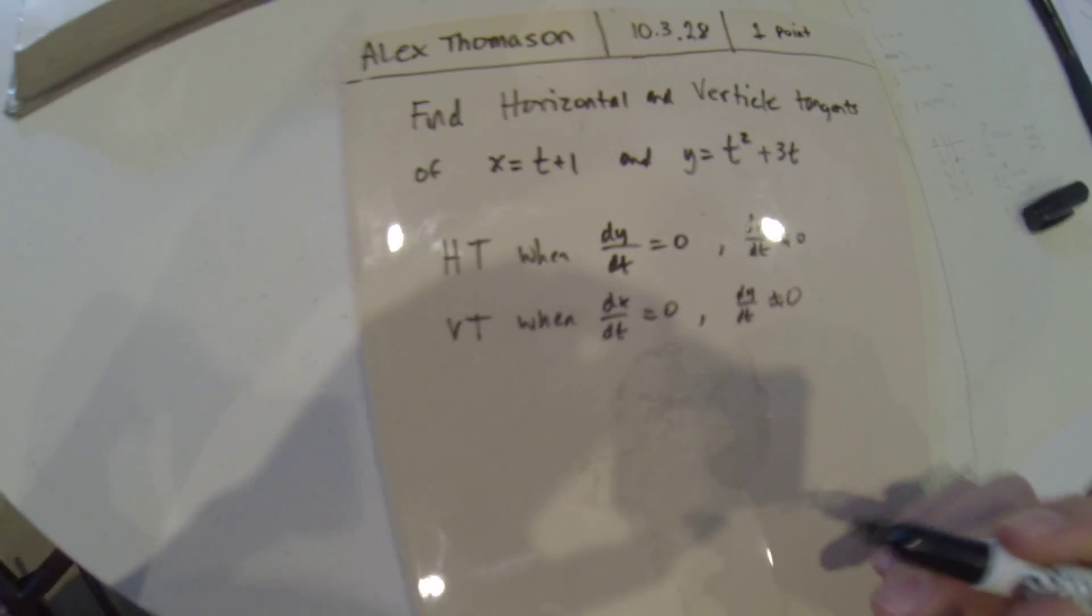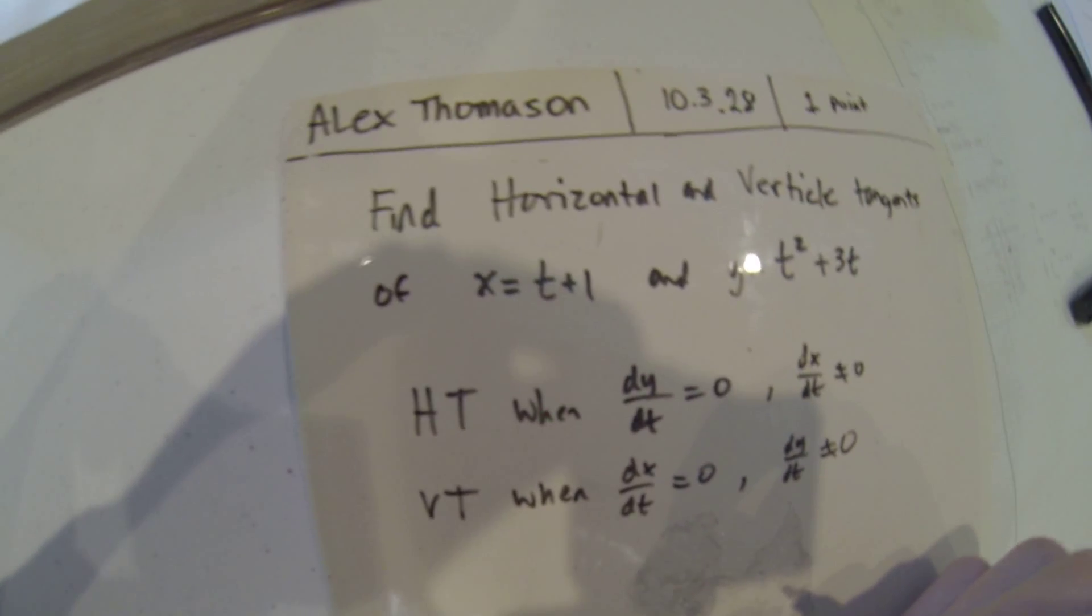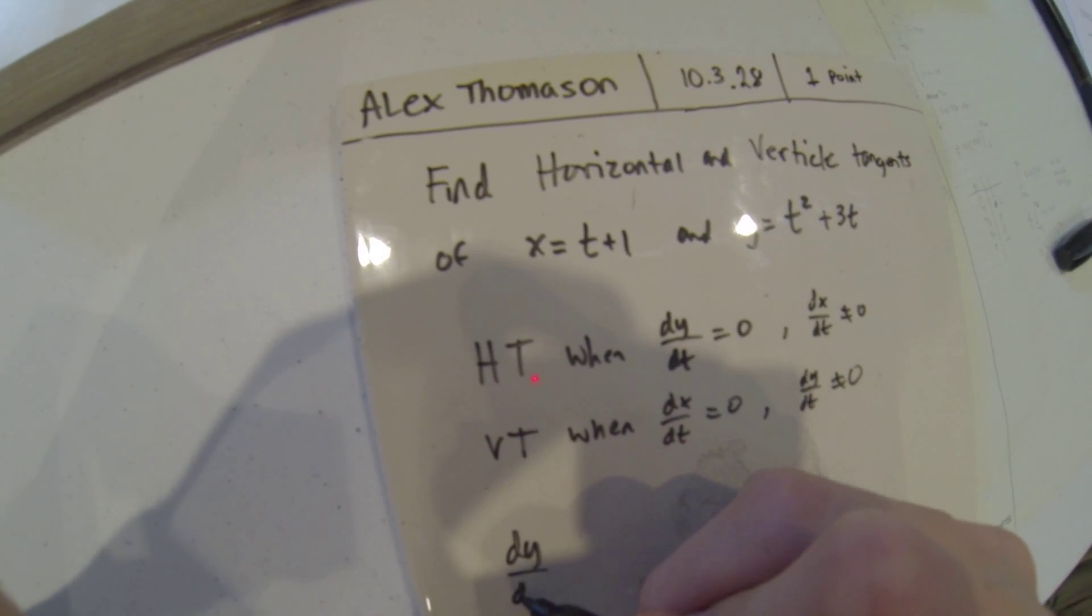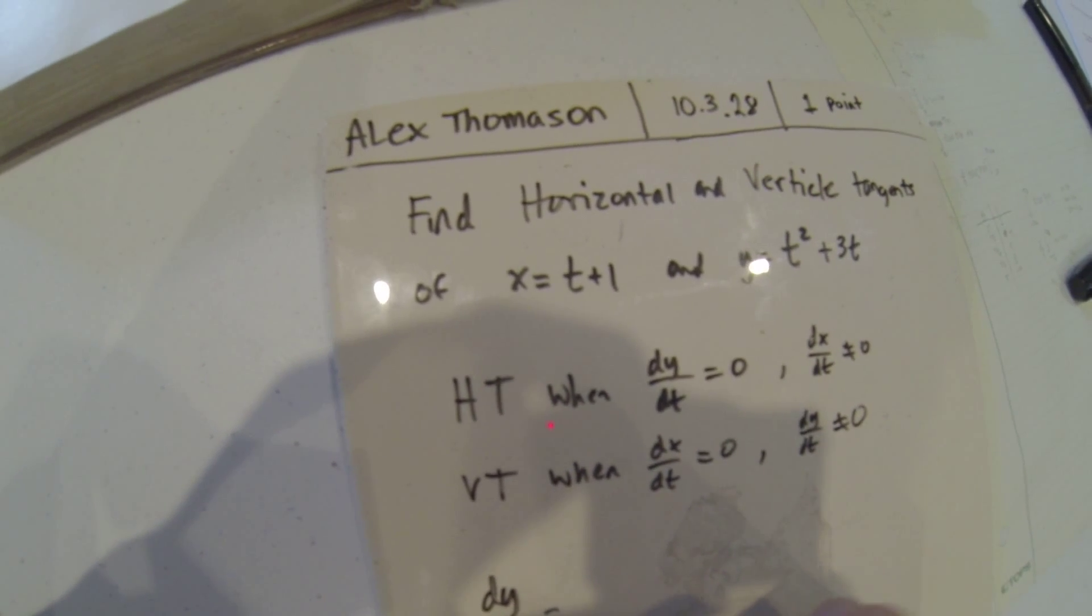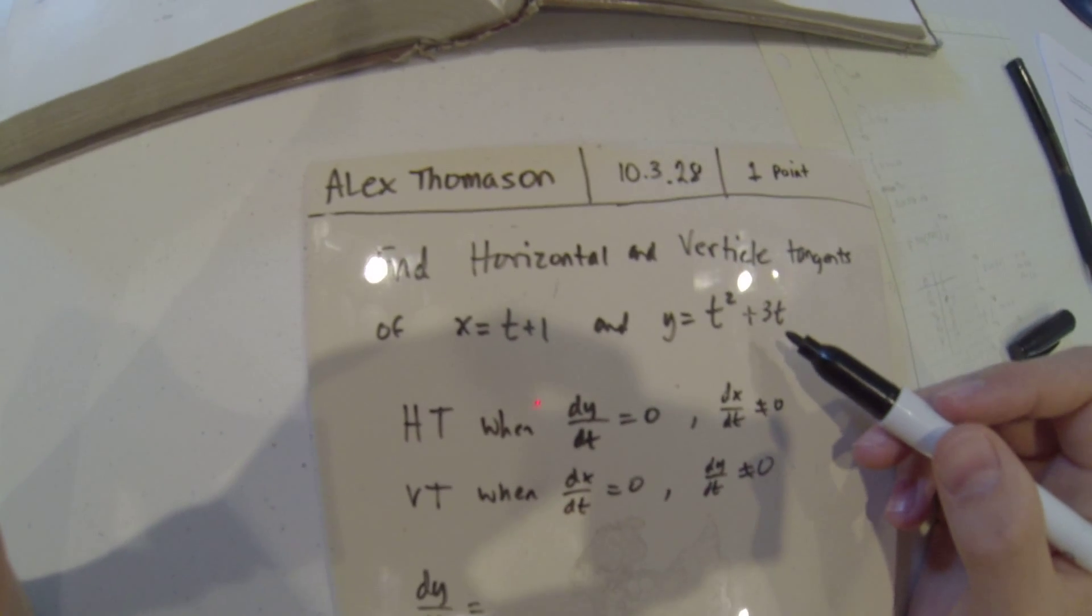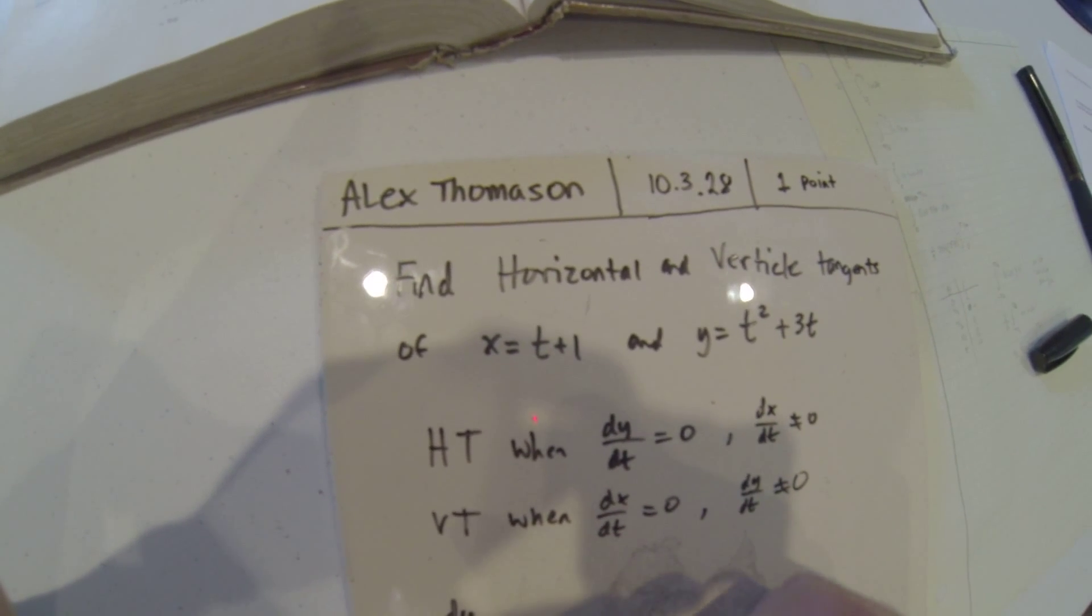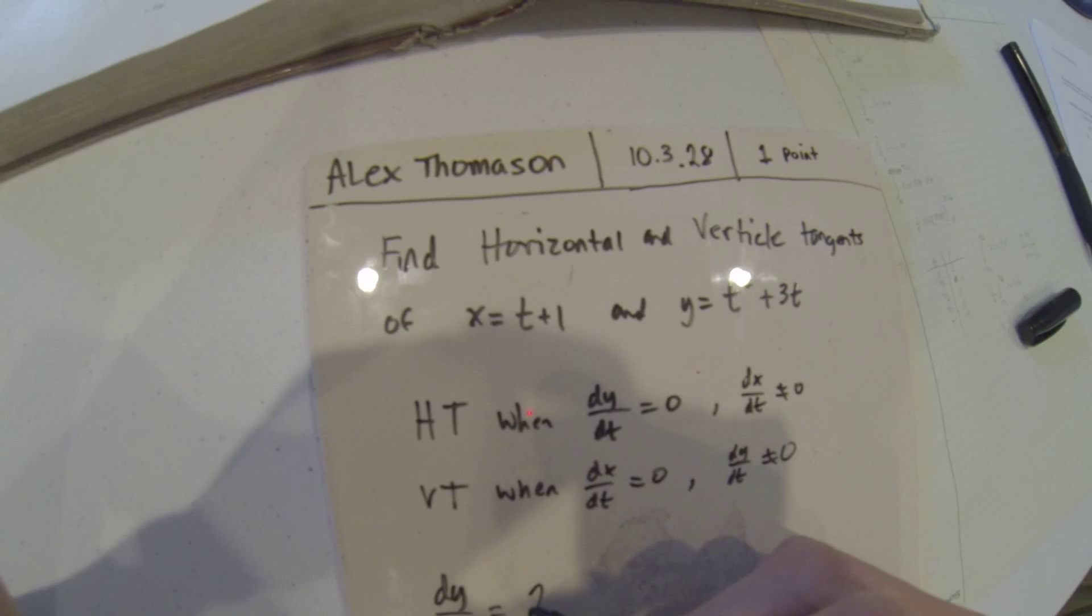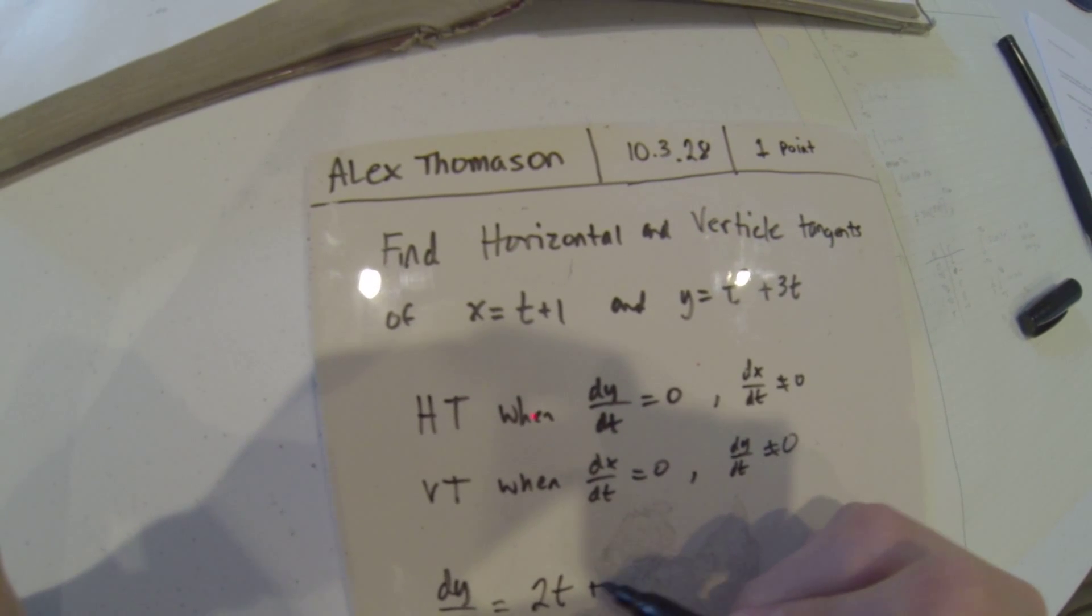So we can start by finding dy dt. It's pretty simple, just look at it, do the derivative rule. So dy dt equals 2t plus 3.